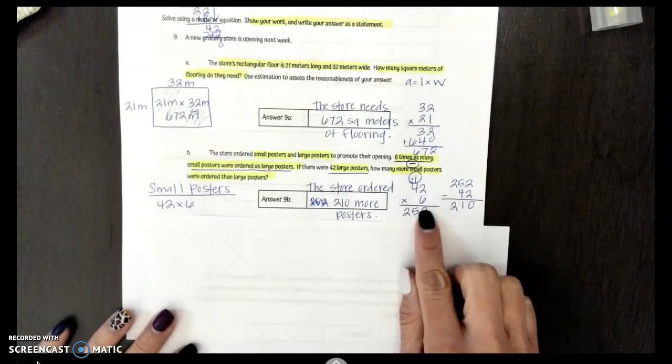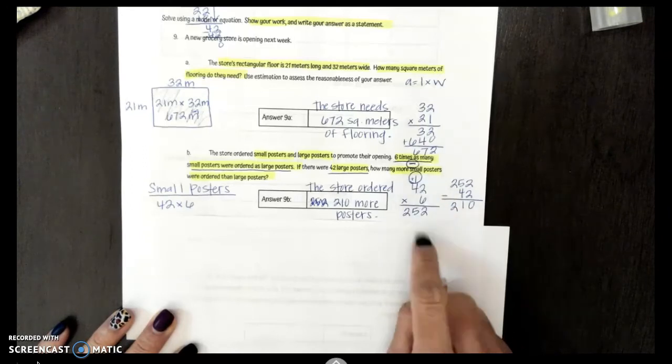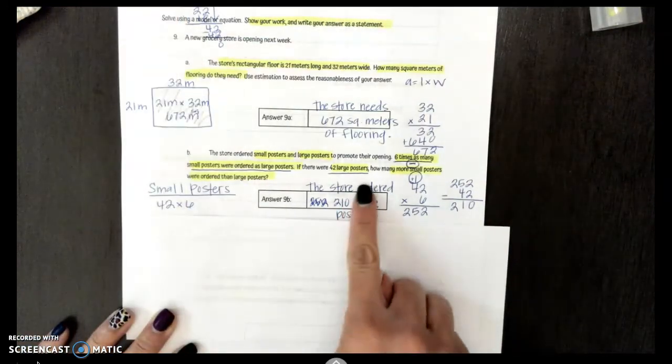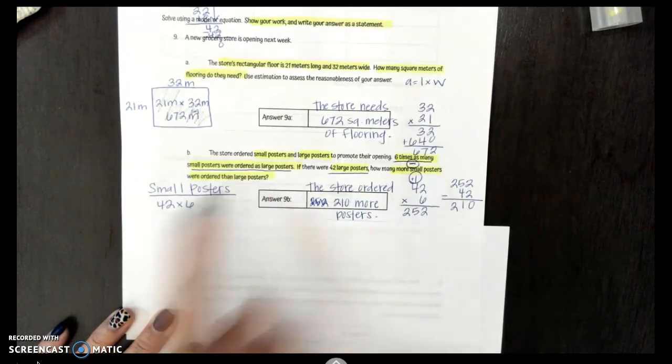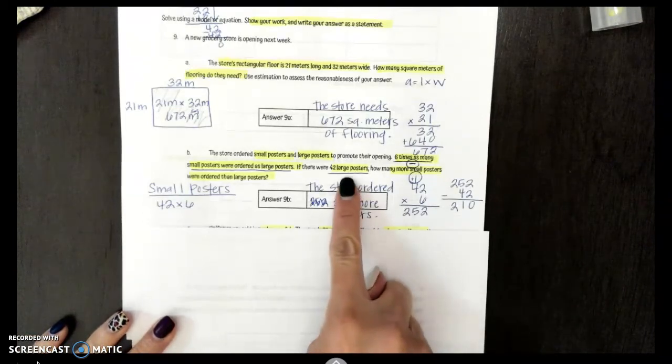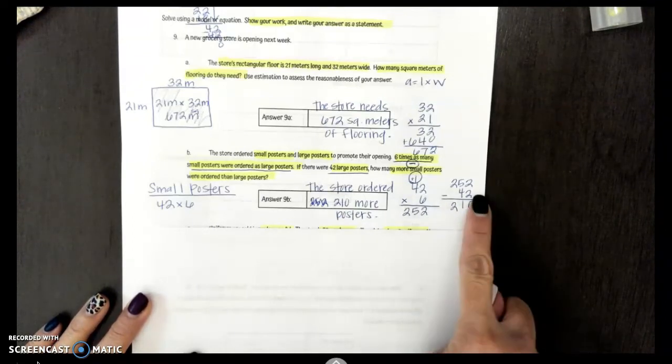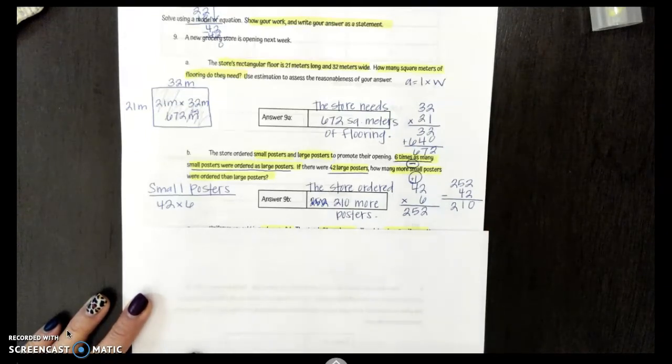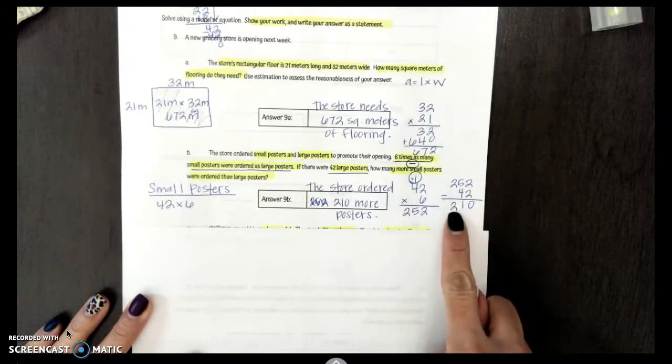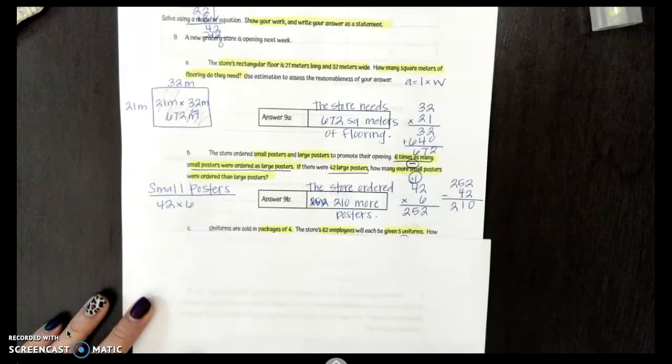So I went ahead and I multiplied 42 and 6. 6 times 2 gives me 12. So 2 goes here and I added my 1 up top. 6 times 4 is 24. Don't forget to add that 1. 252 posters. That's how many small posters they ordered. But it's asking me how many more small posters were ordered than large posters. I know there were 42 large posters ordered. There's 252 small posters ordered. So I can take those two numbers and I can subtract them to determine how many more smaller posters were ordered. 2 minus 2 is a 0 and 5 minus 4 is 1. 2 minus 0 gives me 2. So the store ordered 210 more posters.